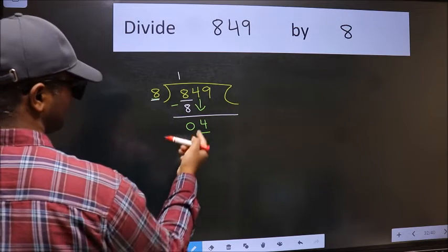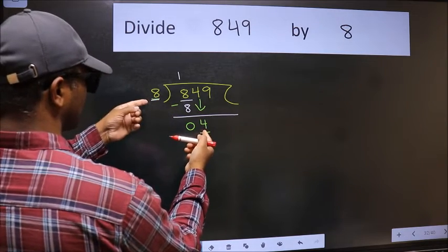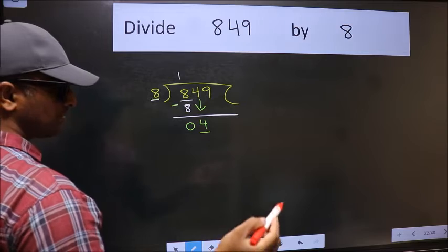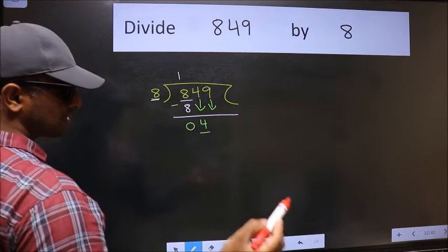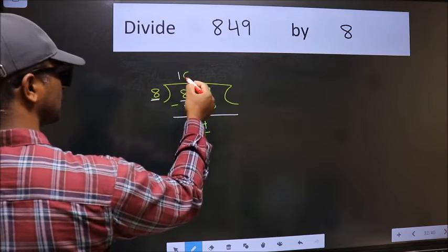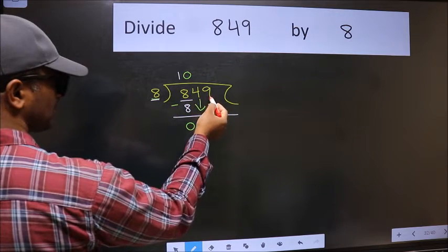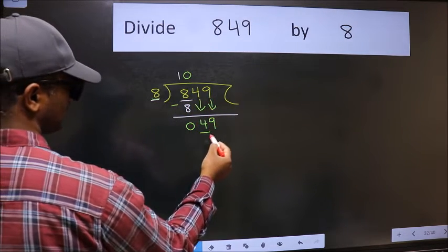4 is smaller than 8, so we should bring down the second number. And the rule to bring down the second number is we should put 0 here, then only we can bring this number down.